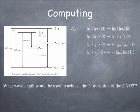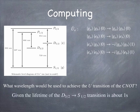I'd like you to compute the wavelength that would be needed to achieve the U transition. Looking at what you have to accomplish, what wavelength would you need to use to actually do that? And given that we know that the quadrupole transition from D to S, the D5 halves to the S1 halves, has a lifetime of something on the order of a second.